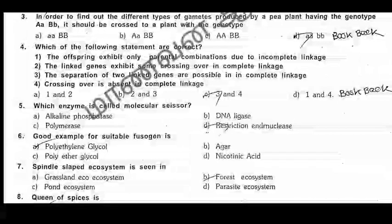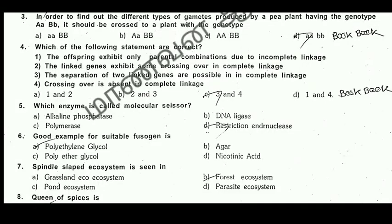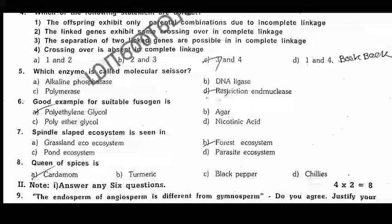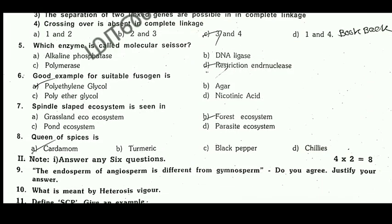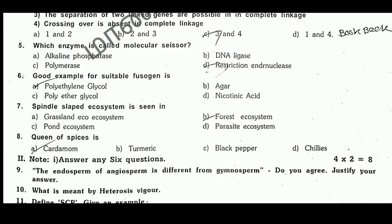Which enzyme is called molecular scissor? Restriction endonuclease. Good examples of suitable vectors: polyethylene glycol, B.G. — that's why you find a B gene. Spindle-shaped ecosystem is seen in forest ecosystem. Queen of spices — cardamom. So this is one of the answers.